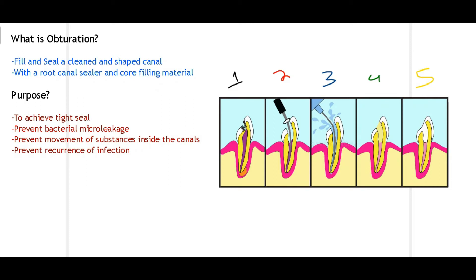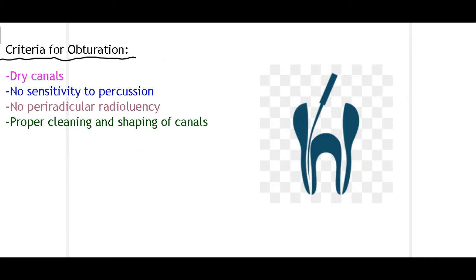The purpose of performing obturation is: firstly, to achieve a tight seal so that any fluid or bacteria cannot breach this space; secondly, to prevent bacterial microleakage so no recurrent infection can occur; thirdly, to prevent the movement of substances inside the canal; and lastly, to prevent infection from occurring again. If we leave pulp remnants or allow leakage, the patient will need re-root canal treatment, which has a worse prognosis than the primary procedure.